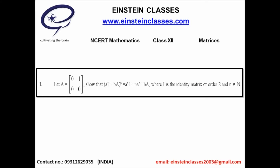First of all, read the question very carefully and mark the important words. Write the given quantities and most importantly, what is asked in the question. The matrix A is given; the important word of the problem is the identity matrix I, which is a 2×2 matrix, written as [[1,0],[0,1]].